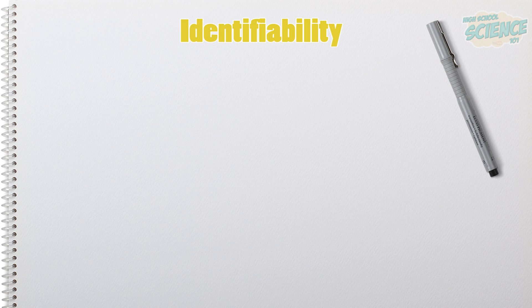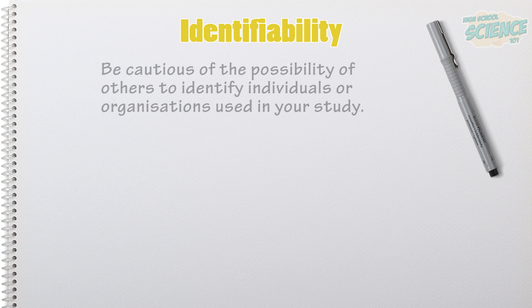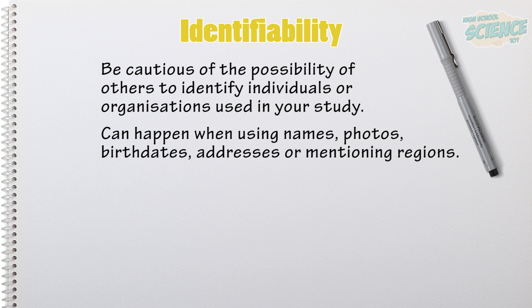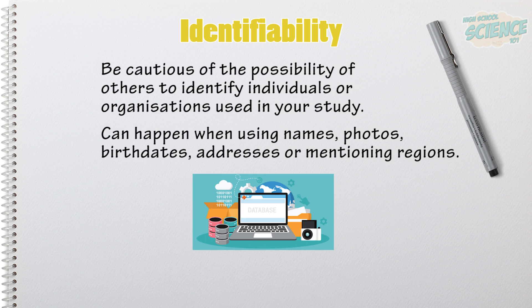When you've collected results, you need to think about how easy it would be for others to identify people or organizations involved in your study. The chances of this are at their highest when you've used names or photos, but also be cautious of using birth dates, addresses, or regions. This area also concerns who has access to your data and how and where it is stored. Minimizing the amount of information you collect and replacing names with codes or numbers will help preserve their anonymity.